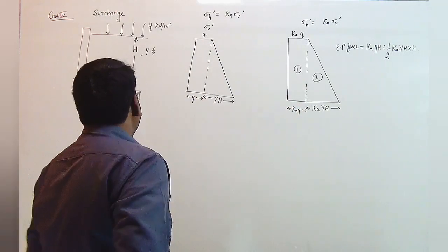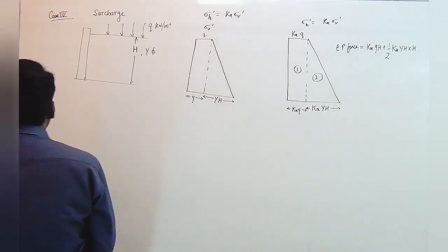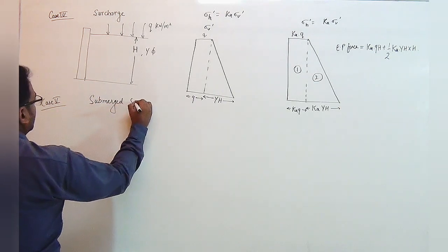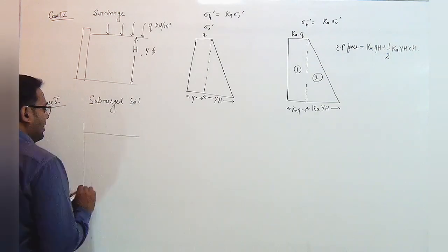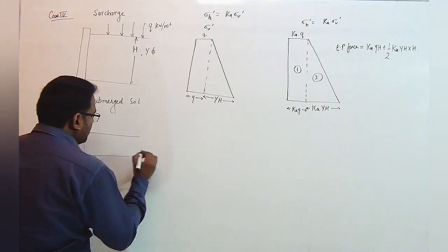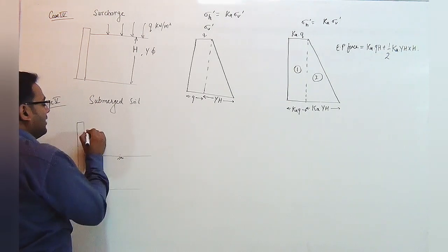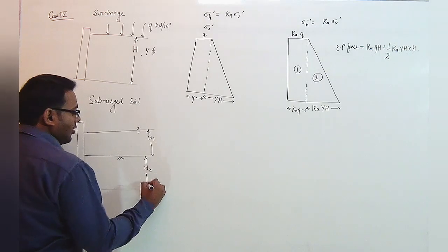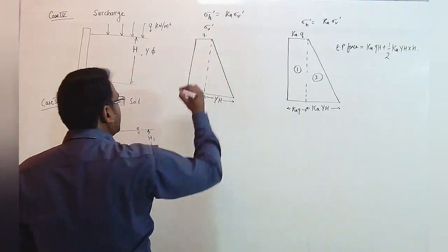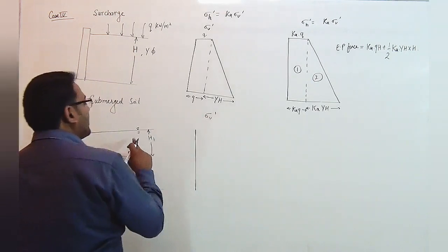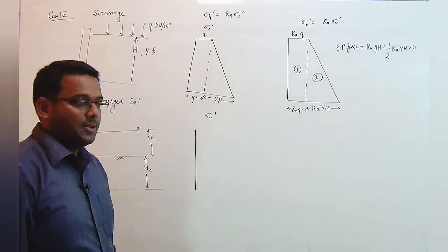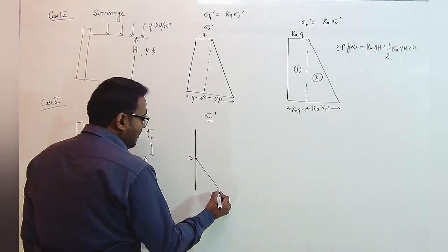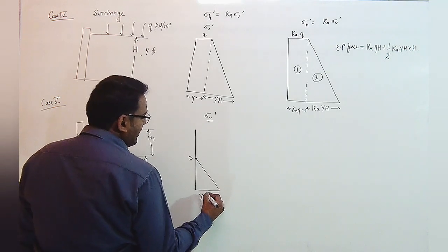Now we are moving towards the second case for today's video, which is the submerged soil. In submerged soil, there is a water level above the soil solids. Let the water level be of depth H1, and after that soil solids are present. The effective stress will remain zero for the first H1 depth as there are no solids present, so the effective vertical stress is zero down to this level.